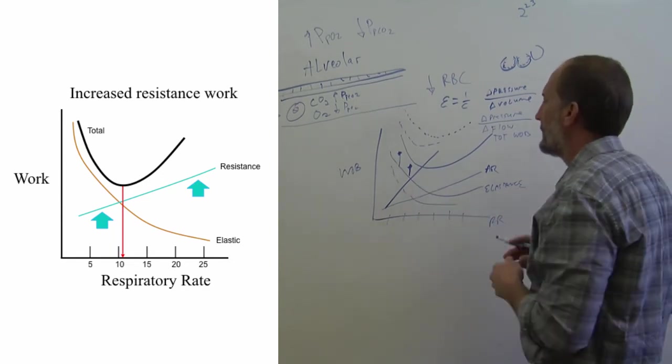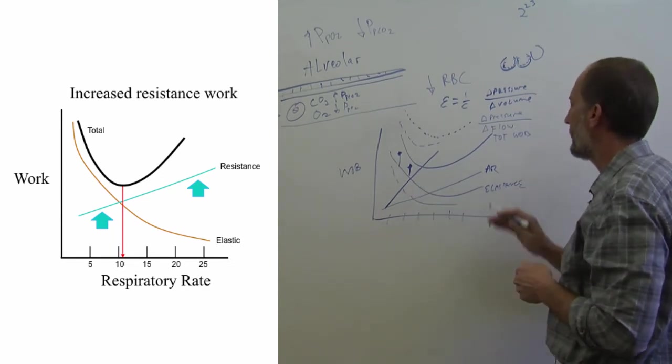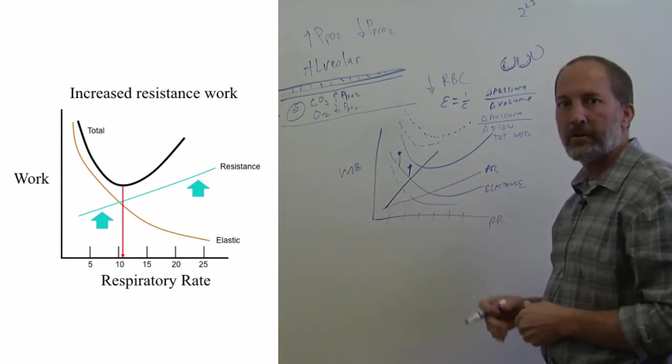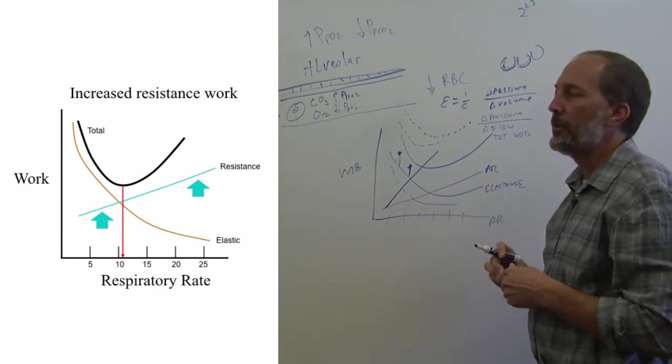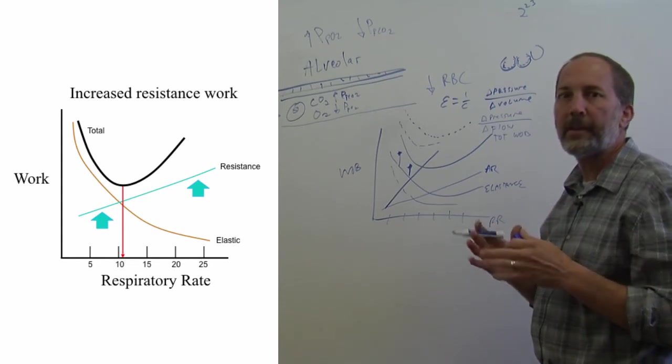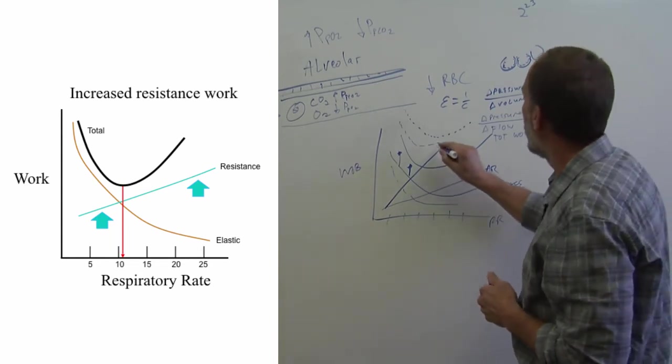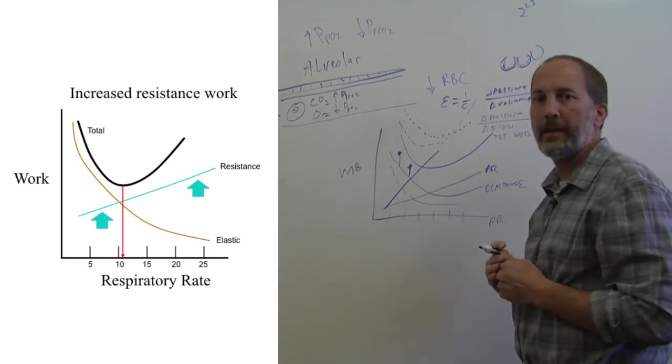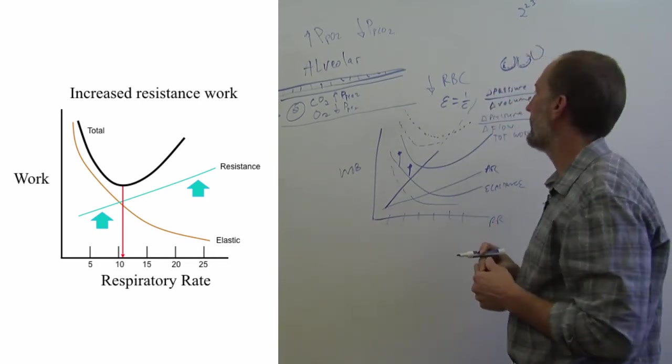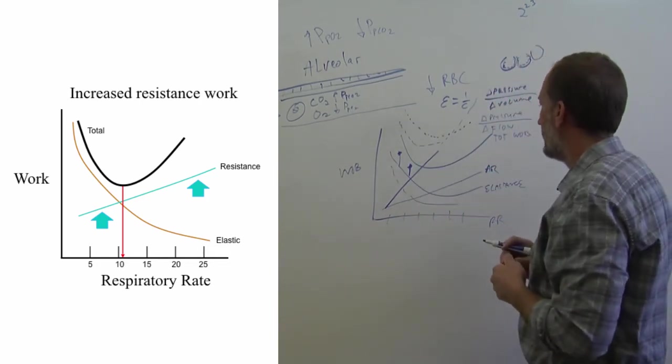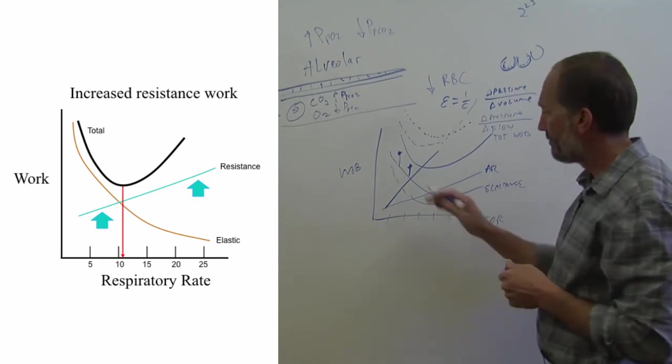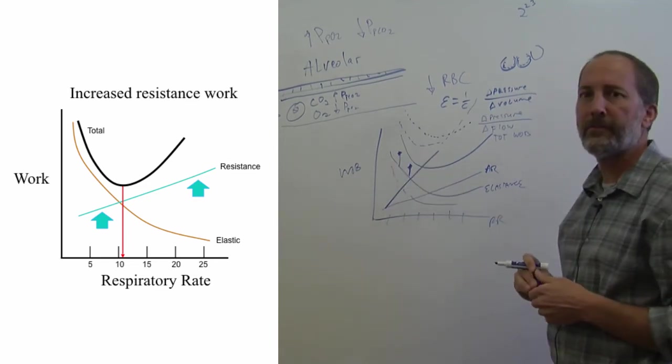And so this is just a function of something we see clinically all the time where those patients who have stiff lungs, they like to breathe faster than normal. Those who have asthma or emphysema, they like to breathe slower. And the faster someone with asthma breathes, that work gets really, really high. It makes it very difficult for them to breathe. So these are real life examples of basic physics principles.